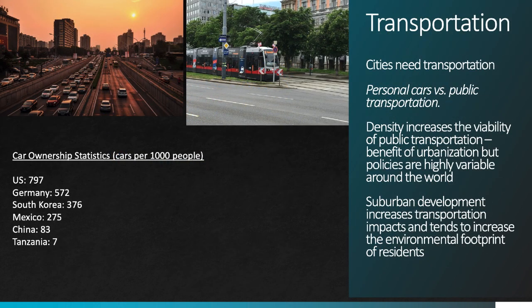Transportation is probably a little less important than electricity in a basic human sense, but it's hard for any of us living in developed economies to imagine a world without transportation options. Cities require transportation because of the nature of work and life in an urban setting — you have to move around. The key choice that cities, states, or countries have to make about transportation in urban settings is between public and private options. Looking around the world, there are massive differences in the way that cars are used. You can see car ownership statistics from 2014 in the images, and even amongst the highly developed economies of the US, Germany, and South Korea, there's a massive difference in the number of cars owned by individuals. The number of 83 cars per thousand in China is now considerably higher as more and more people buy personal cars.